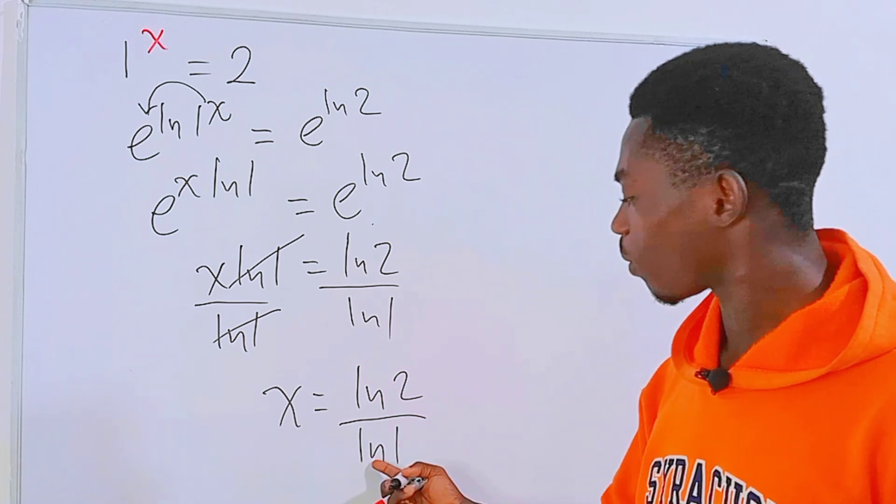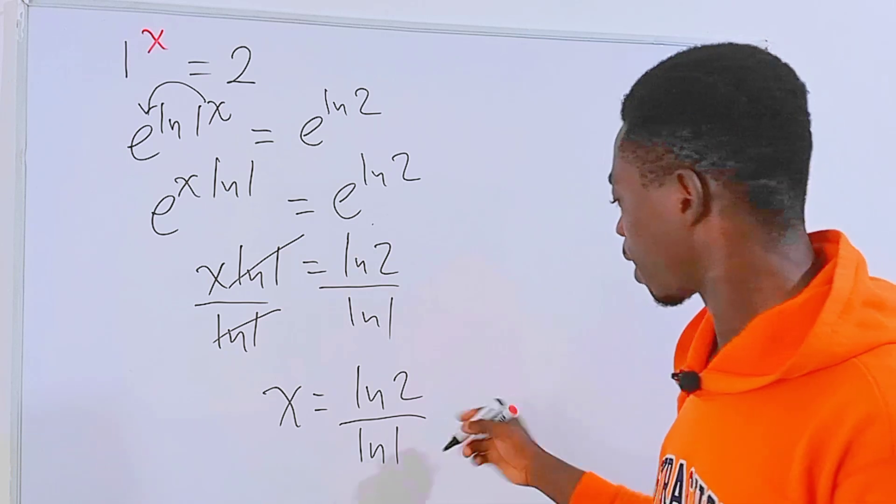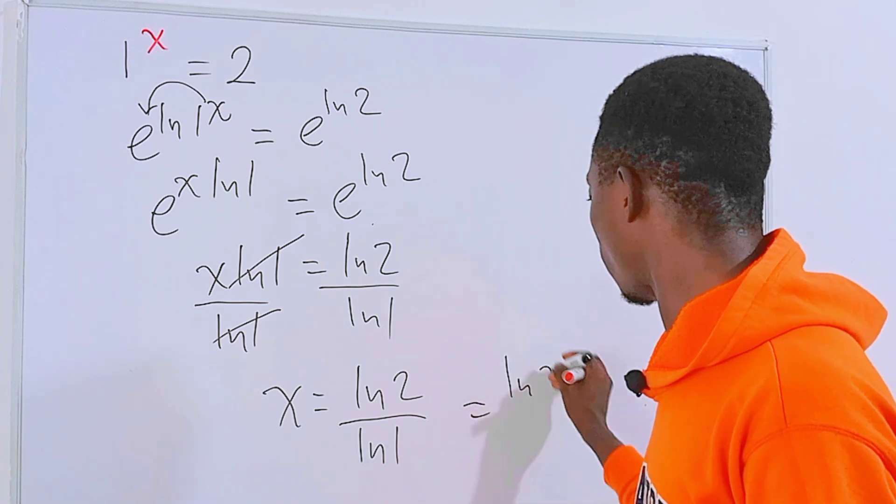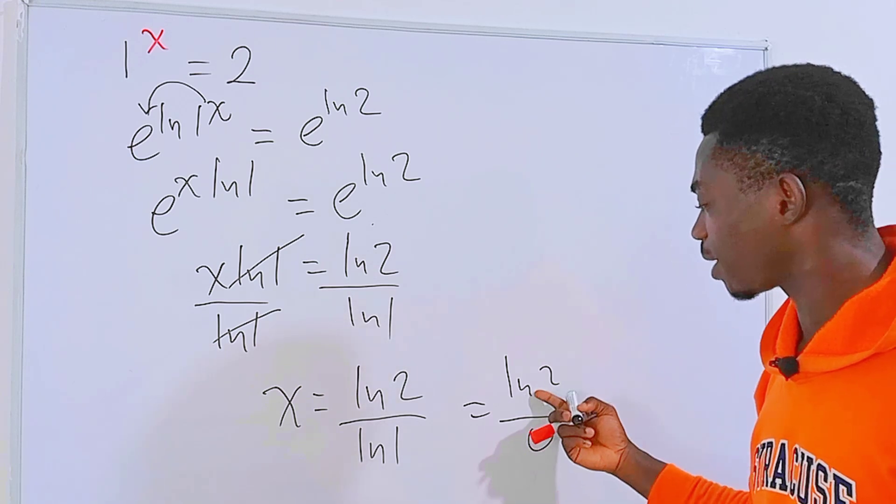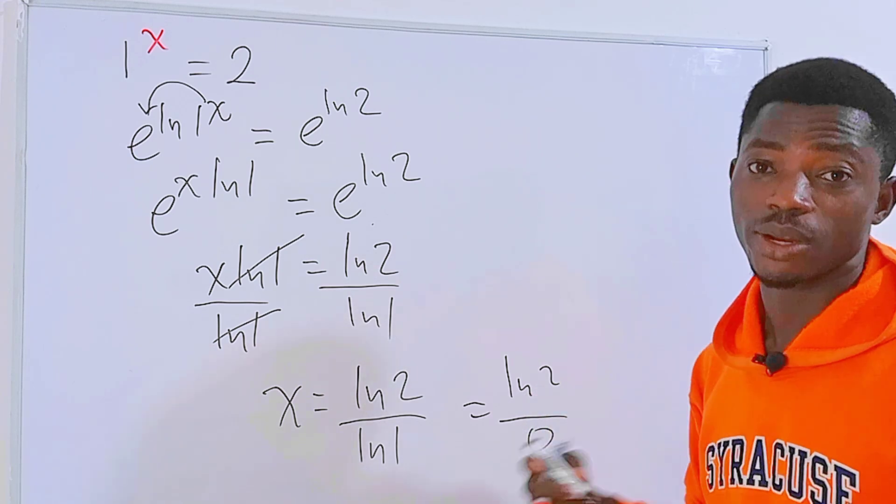Unfortunately, ln of 1 is 0, so this stands out to be ln of 2 divided by 0. The fact that 0 is the divisor means that this is undefined.